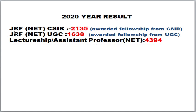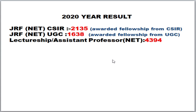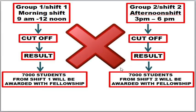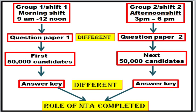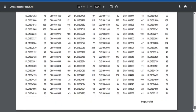In the 2020 result, 2,135 fellowships were awarded under JRF CSIR, and 1,638 candidates were selected under JRF UGC — UGC transfers the fellowship amount directly to the candidate's bank account every month. For lectureship and assistant professorship, totally 4,000 candidates were selected. If you are thinking shift 1 and shift 2 will be separate, I hope this video has given you enough detail. The result compilation is entirely under the control of CSIR HRDG. NTA is not involved in result declaration — the deputy secretary releases the result, not NTA.